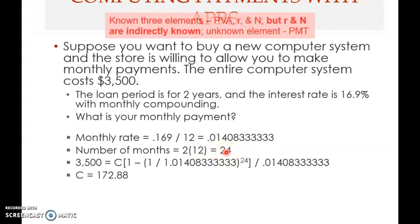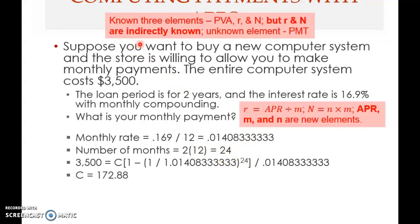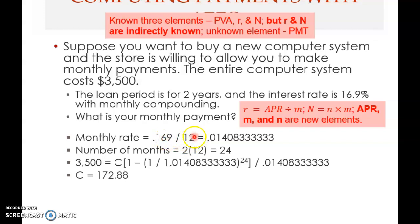What are the three known elements in this example? This is a present value of annuity problem because you want a monthly payment. The present value of annuity is known. R is indirectly known — once you know the APR and the number of compoundings per year m, you can get r. So r is known.